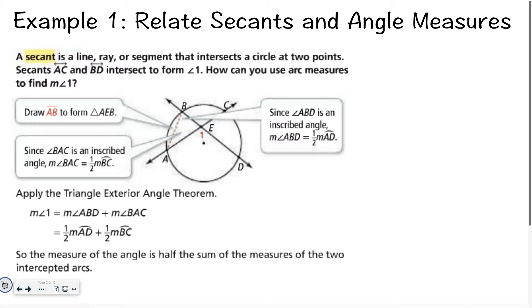We want to figure out how can we use these arc measures in order to figure out what that angle 1 measure is. First of all, if I were to relate this to some previous knowledge, I can draw AB in. That way I have the nice little triangle, triangle AEB. And then, if you look, since angle BAC, so that would be this angle right here, is inscribed, we learned about this yesterday.